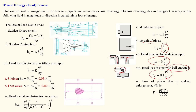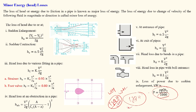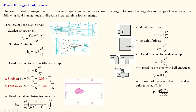For sudden enlargement or contraction, the loss of power can be calculated as: Power = ρ·g·Q·hf, expressed in watts. Dividing by 1000 gives kilowatts. This is similar to the water horsepower formula: density × gravity × discharge × head. So the loss of power in a pipe due to sudden enlargement in kilowatts is: Power (kW) = ρ·g·Q·hf / 1000.